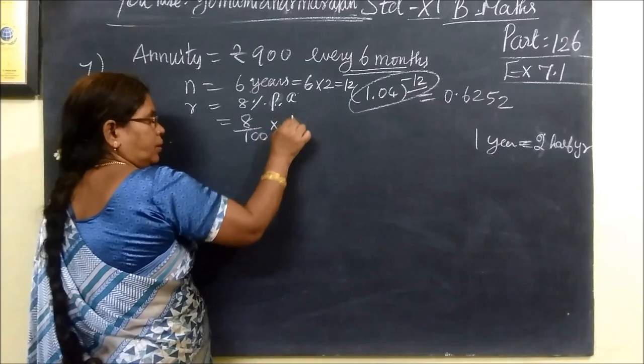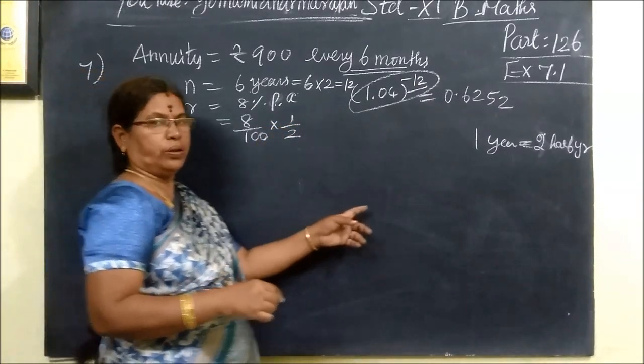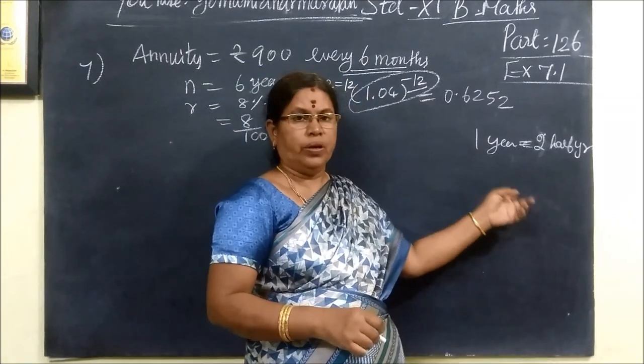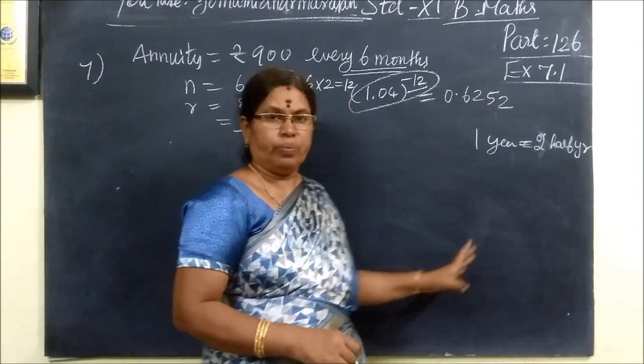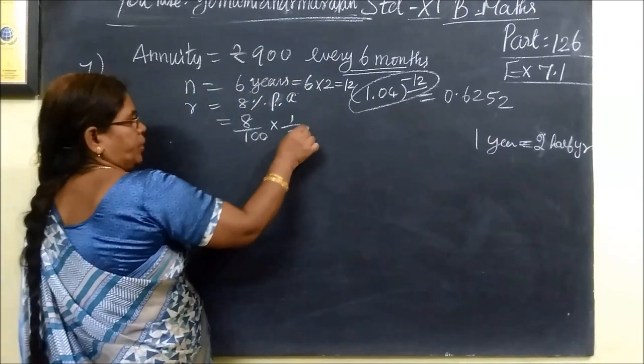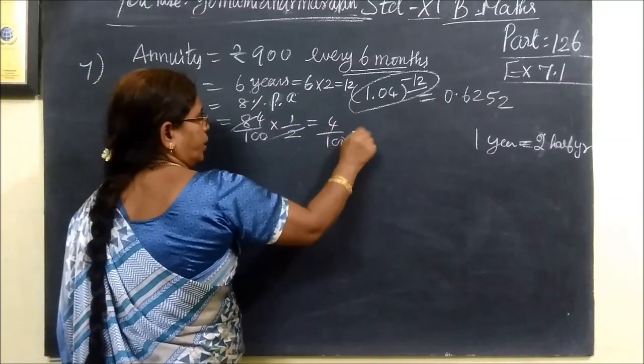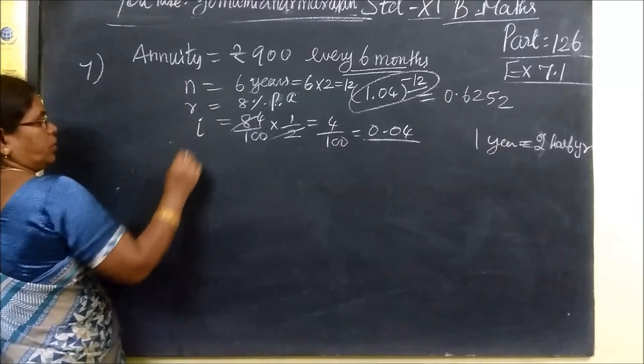8 by 100, 1 by 2. All is quarter means 1 by 4, half year means 1 by 2. So this is I, 4 by 100, 0.04.